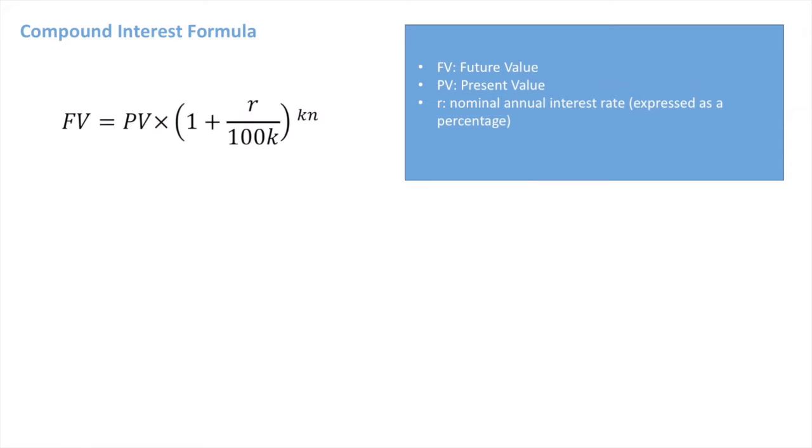R is known as the nominal annual interest rate and it's expressed as a percentage. So for instance, if we have an interest rate of 12%, then r would equal 12. If we have an interest rate of 8%, r would equal 8.